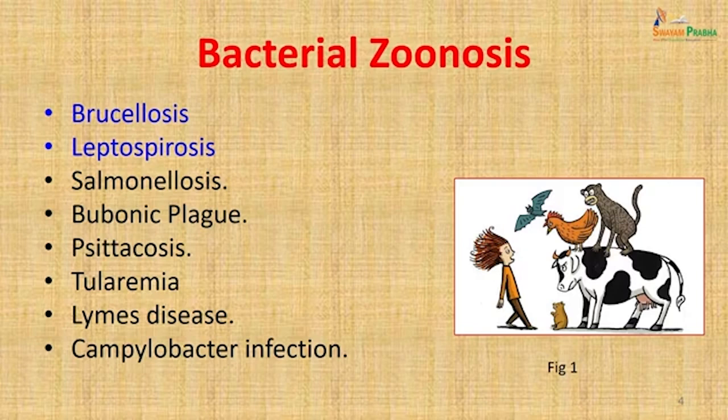The common bacterial zoonotic infections we come across are brucellosis, leptospirosis, anthrax which we studied in the last session, bubonic plague, psittacosis, tularemia, Lyme disease, and campylobacter infection. In today's session we will be discussing the first two — brucellosis and leptospirosis.